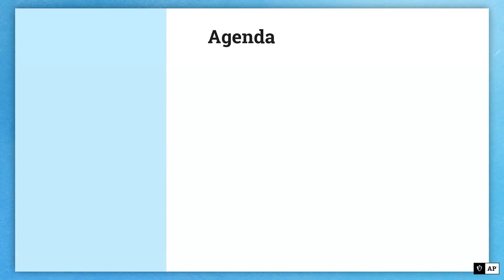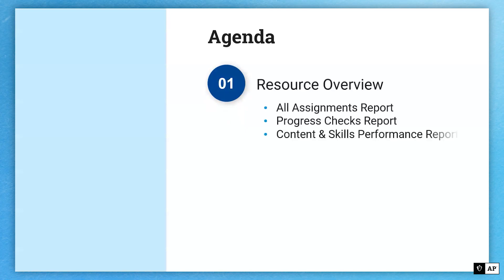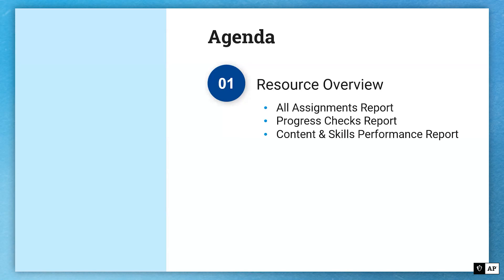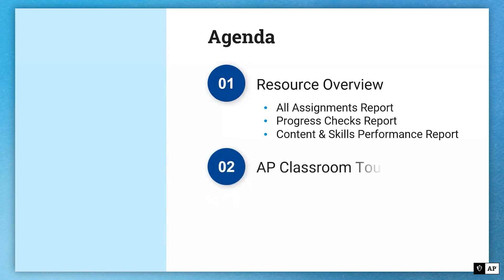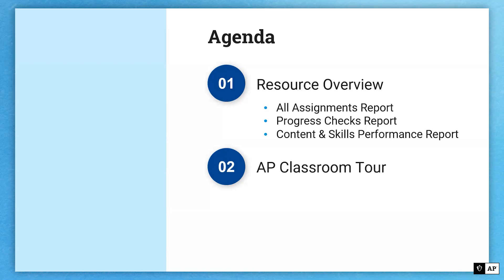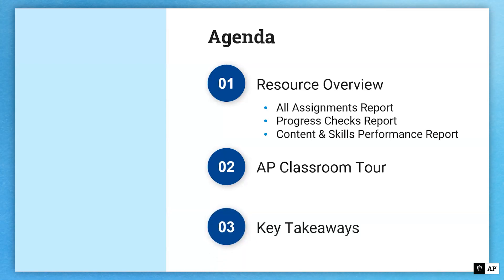Here's a quick look at the agenda for what we'll cover in this video. First, we'll do a quick resource overview. We'll look at the all assignments report, the progress check report, and the content and skills performance report, which is new for this academic year. Then we'll take a quick tour of AP Classroom, show you where to find all of these reports, and look at some data to see how you might analyze it and determine next steps for your students. Then we'll come back and look at some key takeaways.